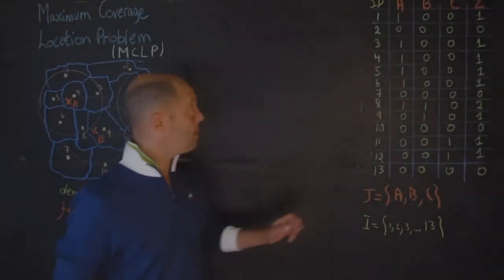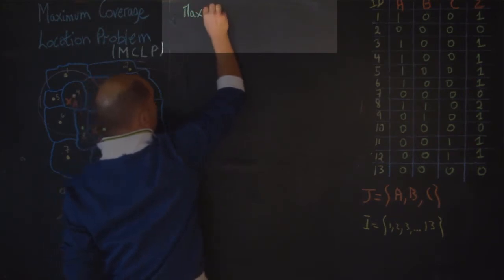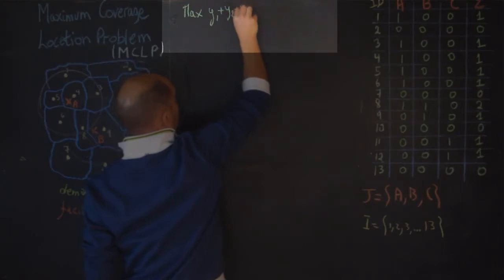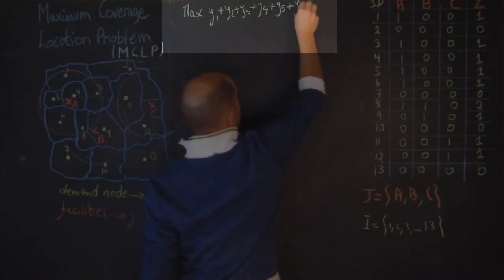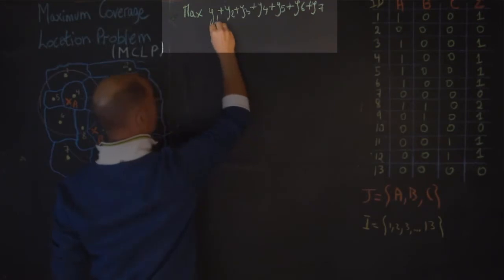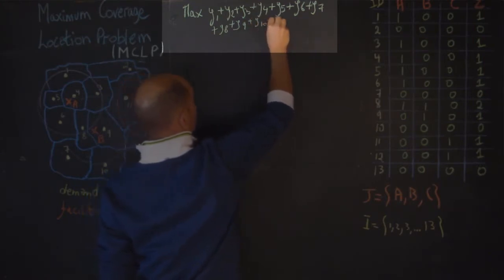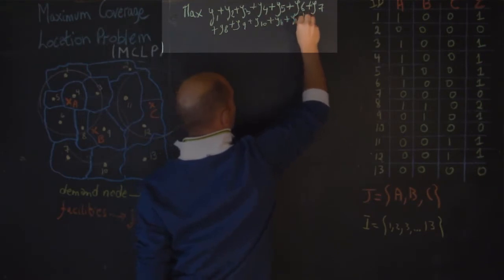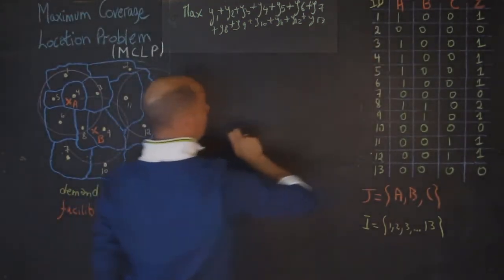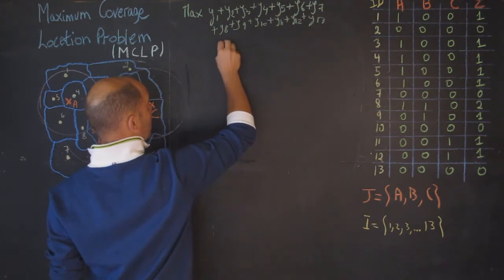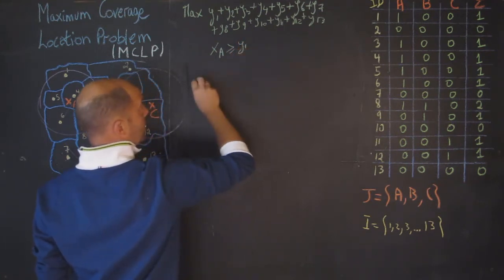We're going to work out the problem here on the blackboard. Our objective is to maximize the demand that is covered, so we maximize y1 plus y2 plus y3 plus y4 plus y5 plus y6 plus y7 plus y8 and so on. For each of the demand nodes we write out the constraint. The first one: x_a should be greater than or equal to y1.